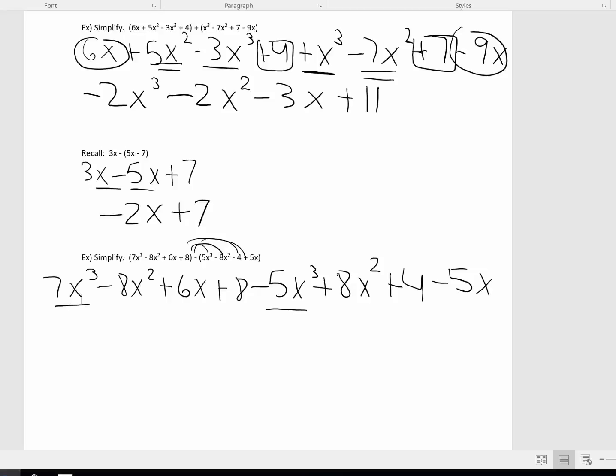Well, 7x cubed minus 5x cubed is 2x cubed. Negative 8x squared plus 8x squared, that is 0, so I don't need to write anything down for that. 6x minus 5x is positive 1x, but I'm going to write just positive x. And then 8 plus 4 is positive 12.